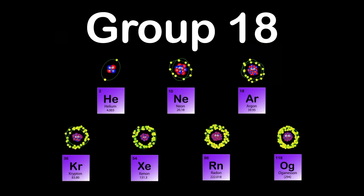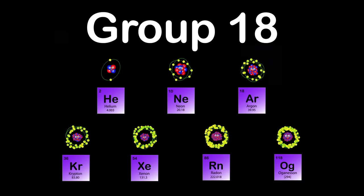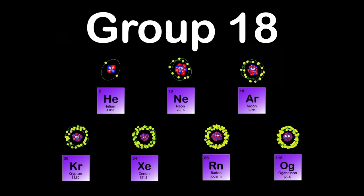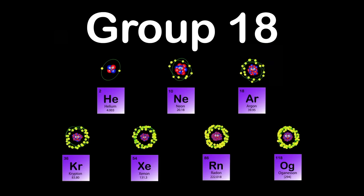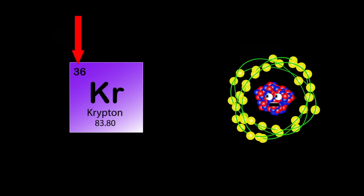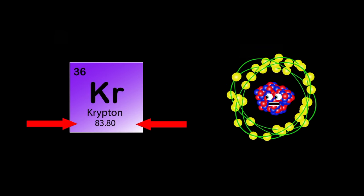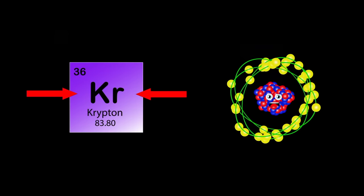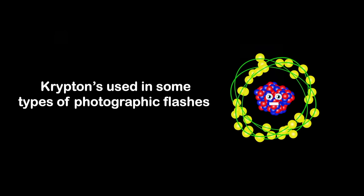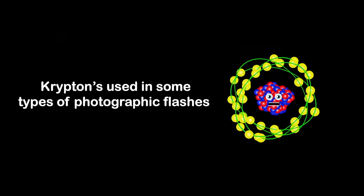We are the noble gases in group 18, with six elements and a seventh which is predicted to be. I am Krypton, my atomic number is 36, my atomic mass is 83, my symbol is Kr. Krypton is used in some types of photographic flashes and in high-speed photography.